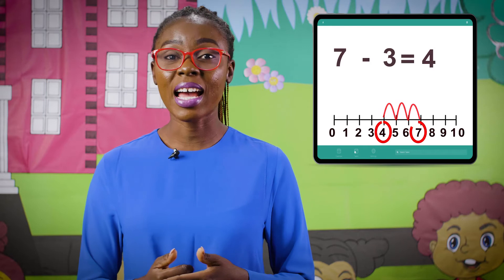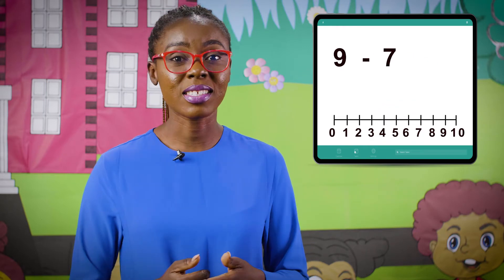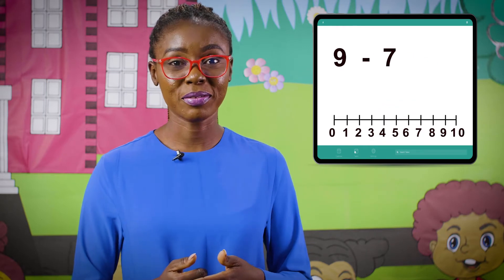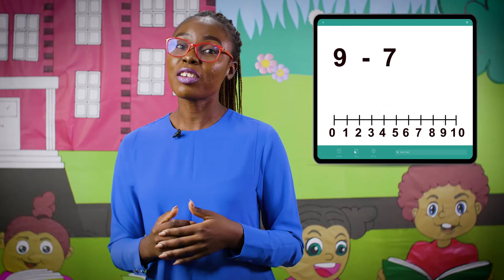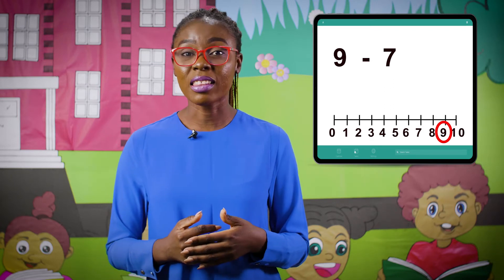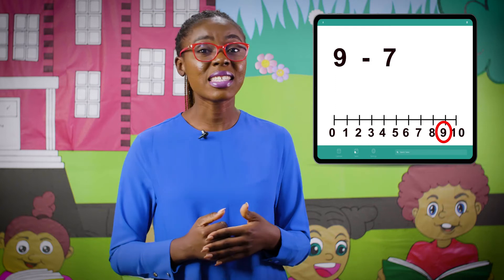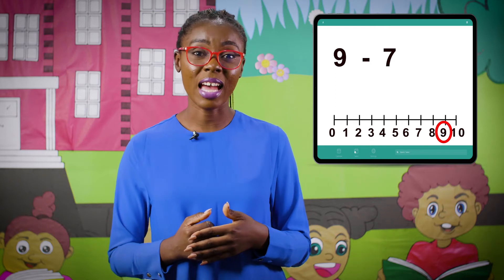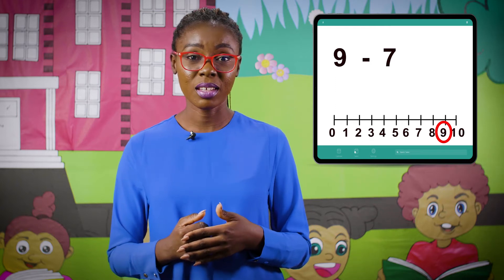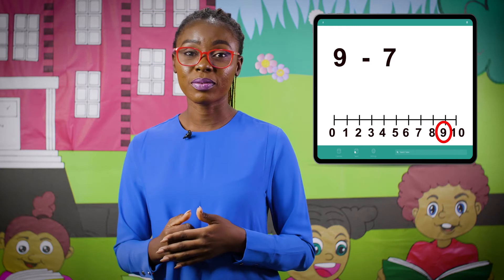How about nine take away seven? The bigger number is nine, so that is where we start from on the number line. And then we have to count back seven times. Are you ready to count with me? Let's go.